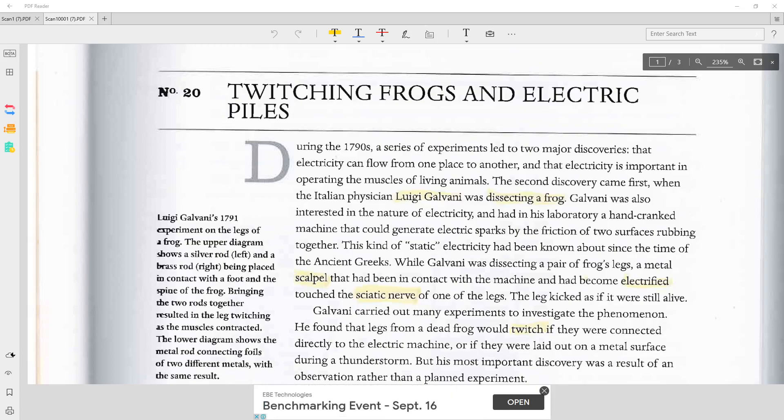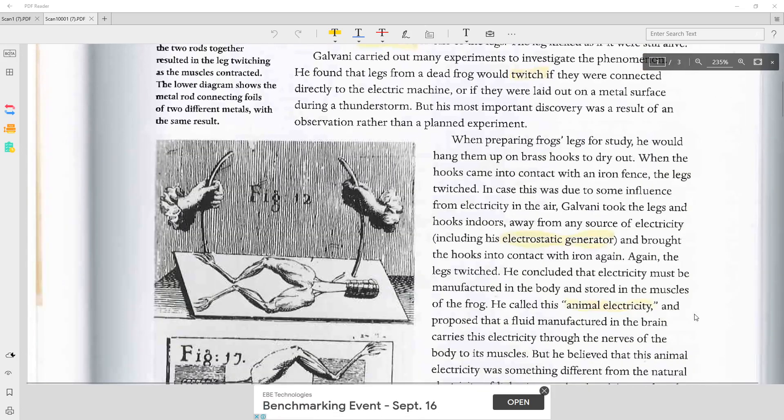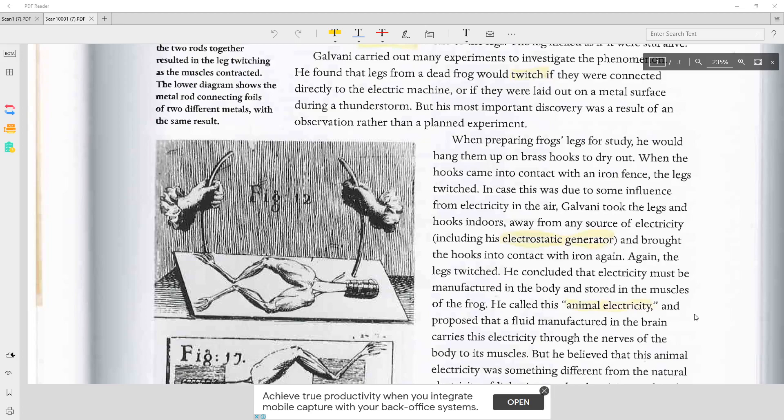Galvani carried out many experiments to investigate the phenomenon. He found that legs from a dead frog would twitch if they were connected directly to the electric machine or if they were laid out on a metal surface during a thunderstorm. But his most important discovery was a result of an observation rather than a planned experiment.